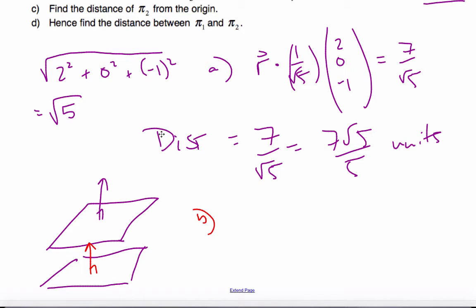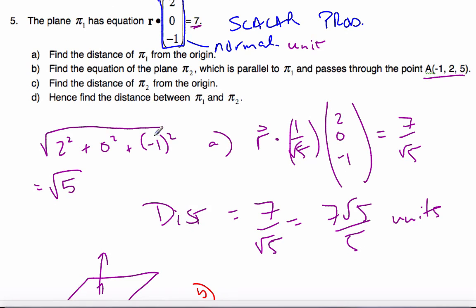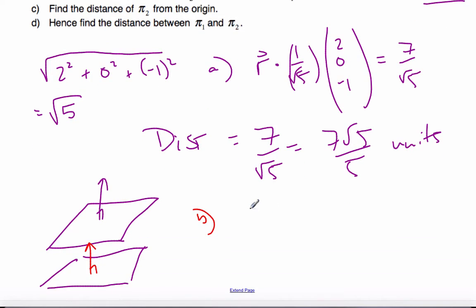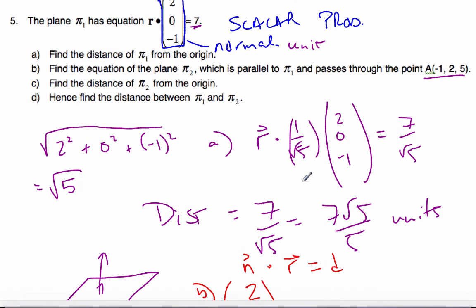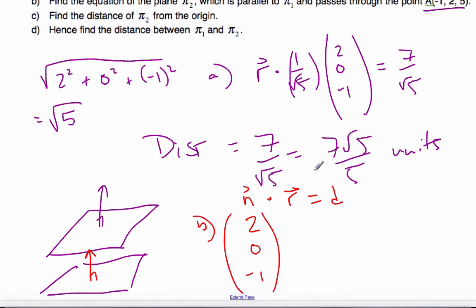Well, in part B, if I know the normal vector for the first plane is 2, 0, minus 1, that's the normal vector dot some value r, it will equal d. So I can use my point, negative 1, 2, 5, dot negative 1, 2, 5, will equal d.